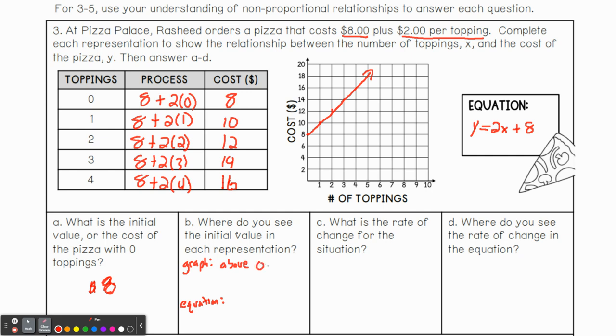I want to make sure we distinguish what the difference is. In the graph, we see the initial value above zero, zero. So in this case, above zero, zero, or we could say at zero, eight.